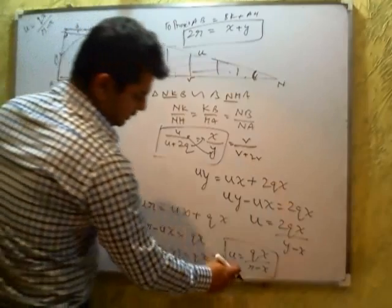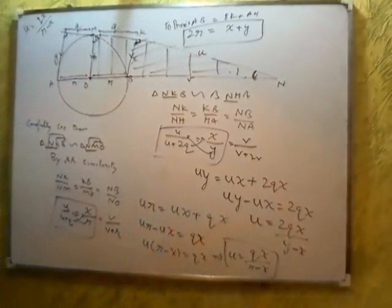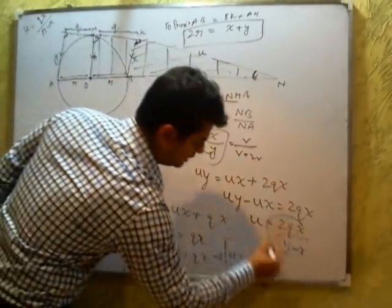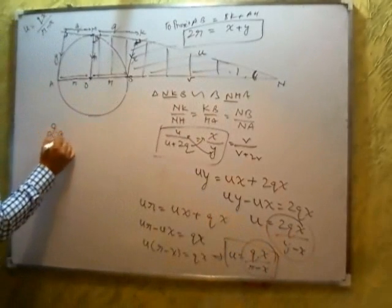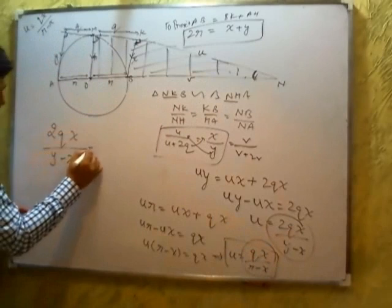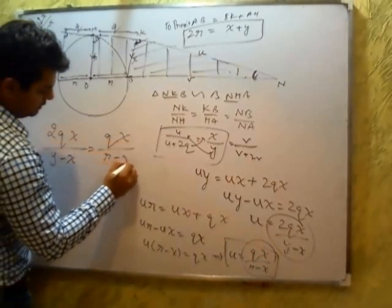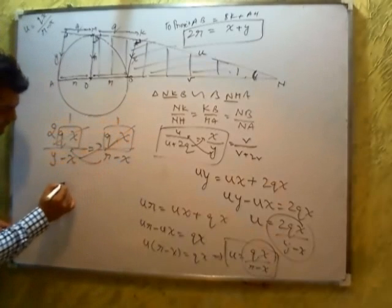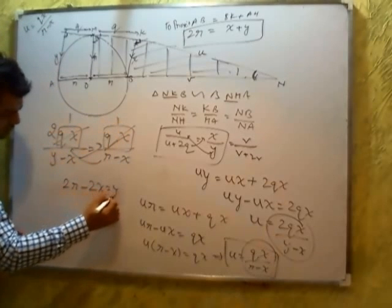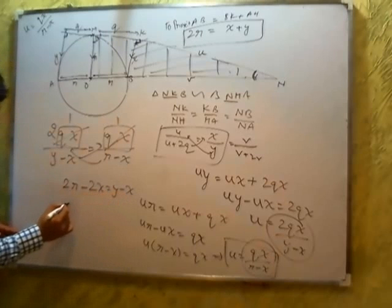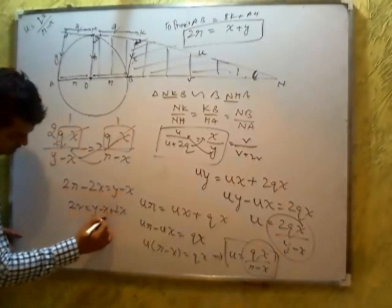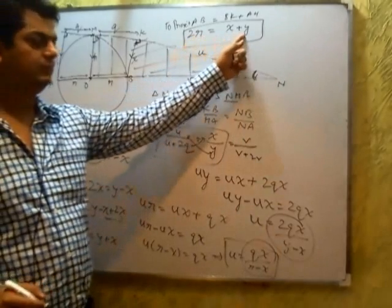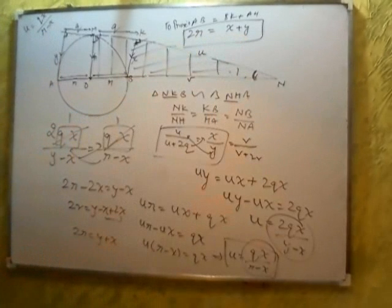Now U is equal to this and U is equal to this. Equating these two will eliminate U. The same number gets cancelled. It comes here: 2R minus 2X equals Y minus X. Then 2R equals Y minus X plus 2X, that is 2R equals Y plus X. So I hope I am clear with my point — I just proved this question.